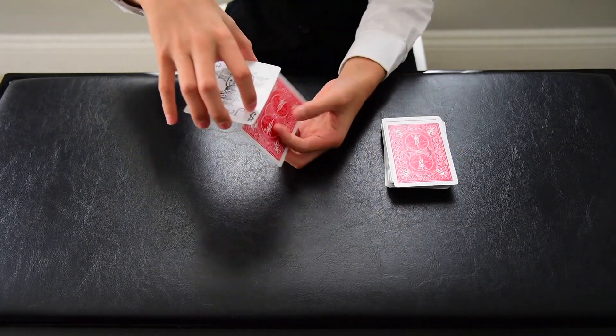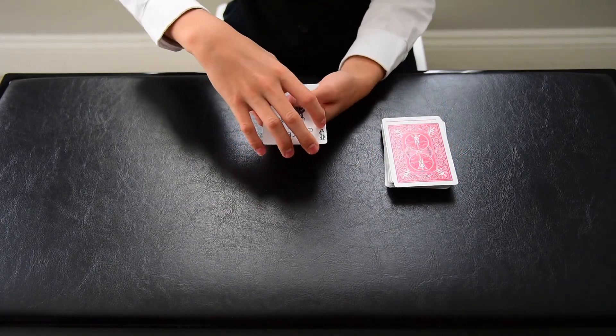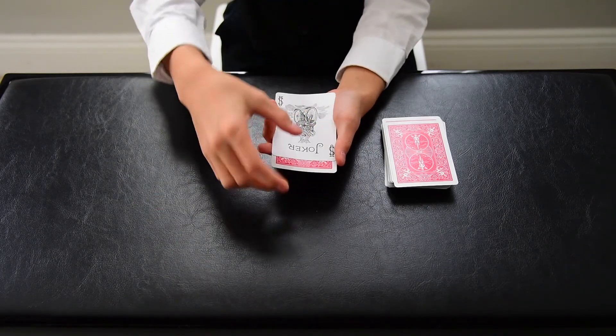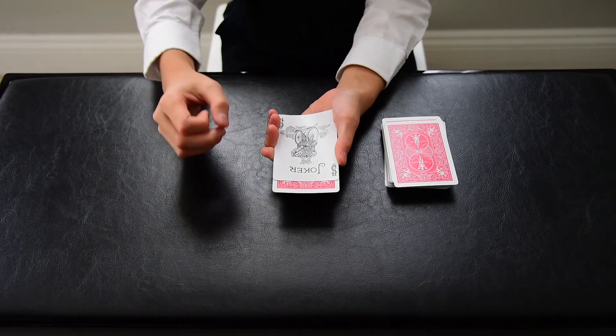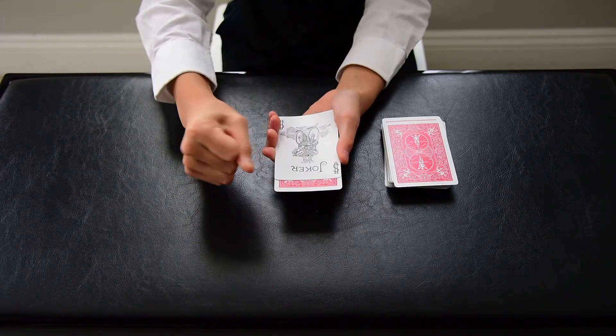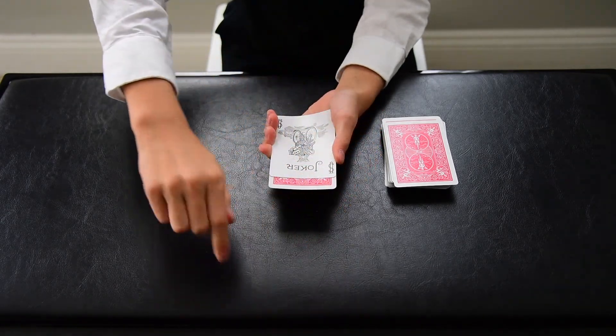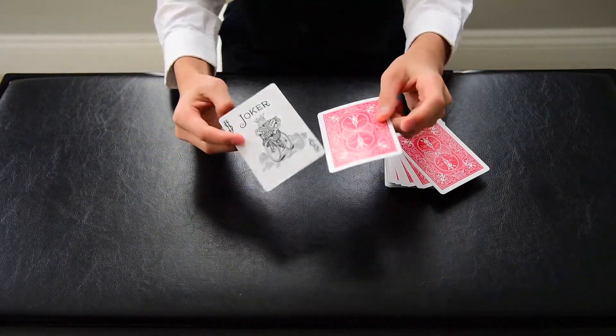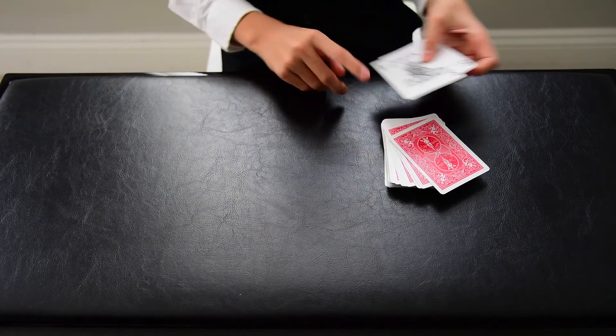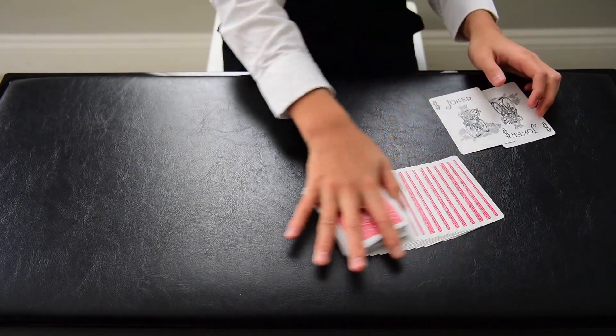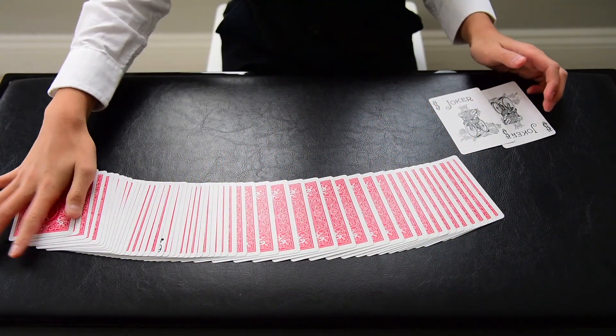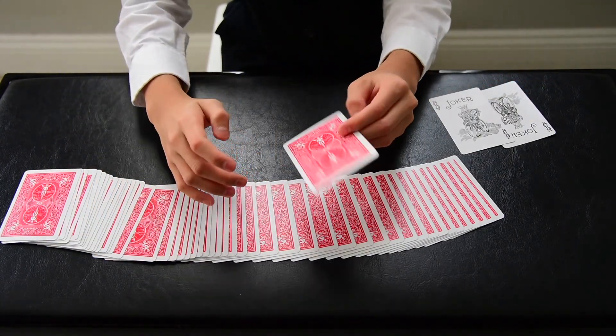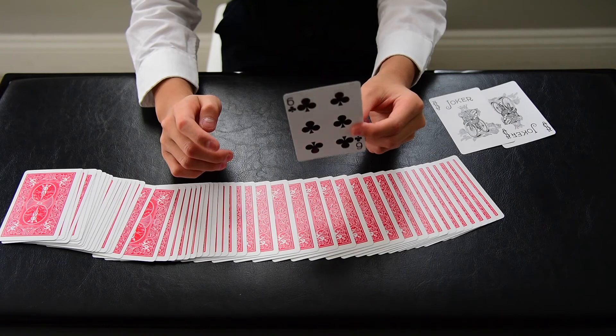We flip over the bottom joker. So you've got this joker, the other joker, and a card sandwiched in between. And all I have to do is snap my fingers and wave my hand and pluck the cards. And there are only two cards. But there's one card face up in the middle of the deck, and that card is none other than the spectator's selection, the six of clubs.